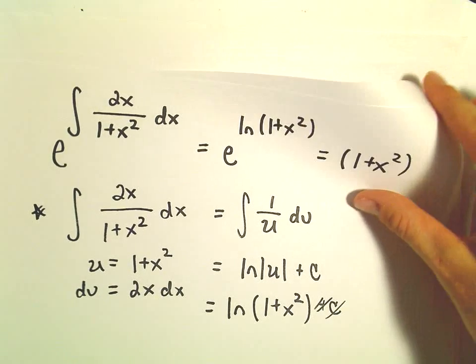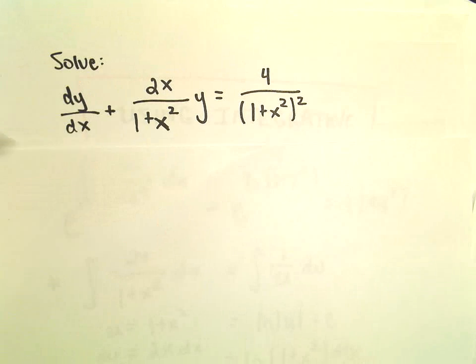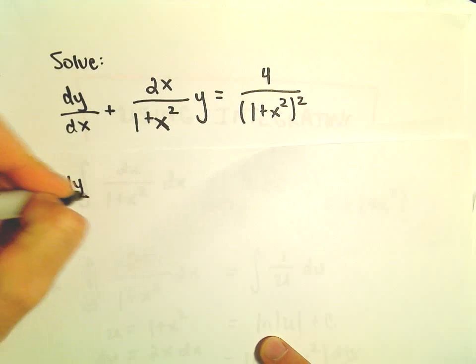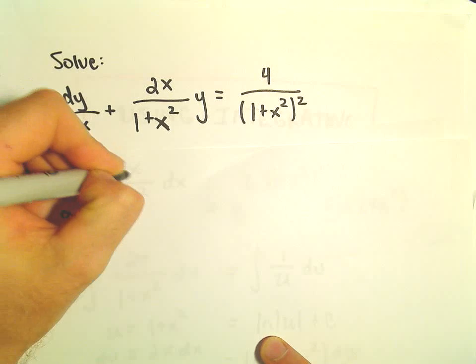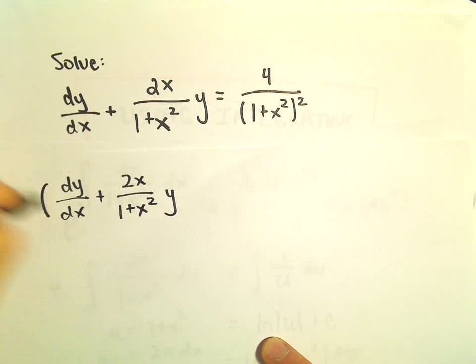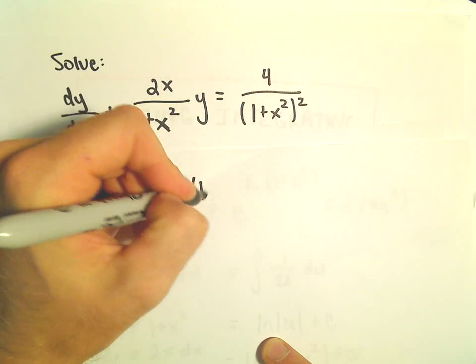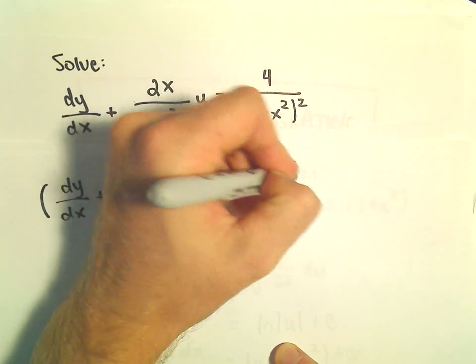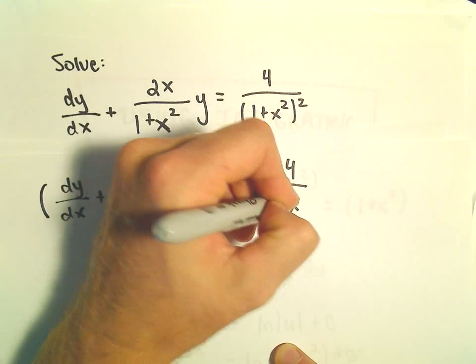So we're going to multiply both sides by 1 plus x squared. So we'll have dy over dx plus 2x over 1 plus x squared times y. We're going to multiply all of that by 1 plus x squared. And we'll do the same thing on the right side as well.